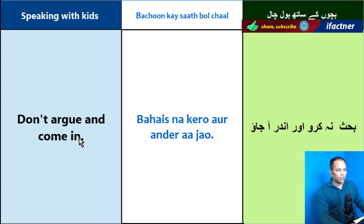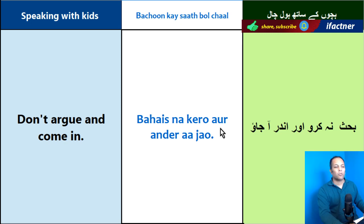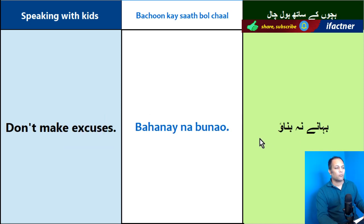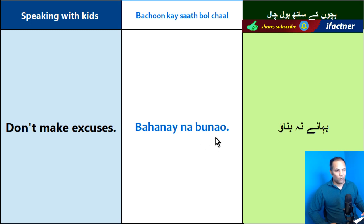Don't argue and come in. Bahs na kero aur ander aa jao. Bahs means 'argument' or 'argue,' na means 'not,' kero means 'do,' aur means 'and,' ander means 'inside,' aa jao means 'come.' Bahs na kero aur ander aa jao — Don't argue and come in.